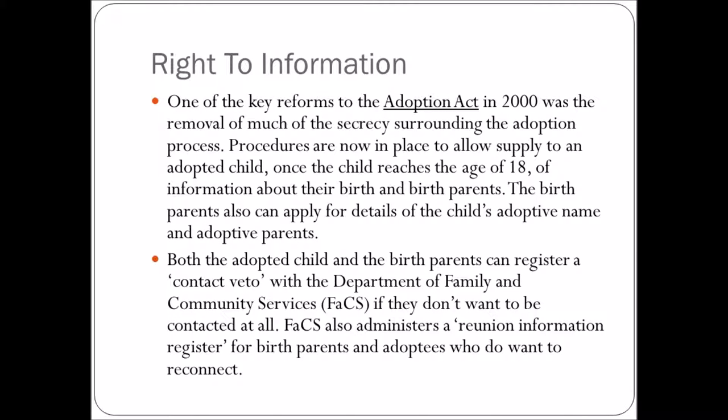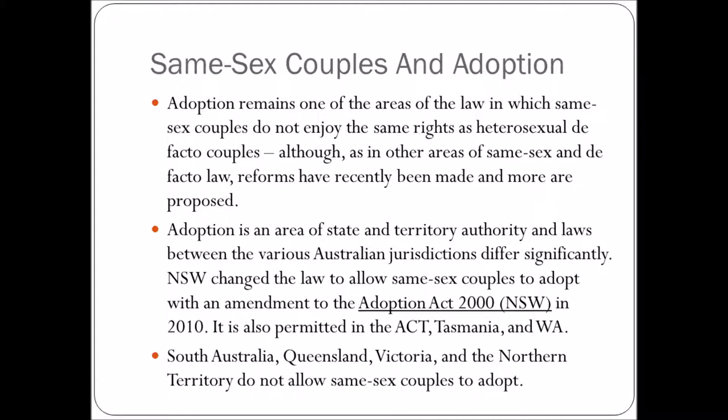One of the key reforms to the Adoption Act in 2000 was the removal of much of the secrecy surrounding the adoption process. Procedures are now in place to allow an adopted child, once they reach 18, to obtain information about their birth and birth parents. Birth parents can also apply for details of the child's adoptive name and adoptive parents. Both the adopted child and birth parent can register a contact veto with the Department of Family and Community Services if they don't want to be contacted. FACS also administers a reunion information register for birth parents and adoptees who do want to reconnect.